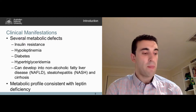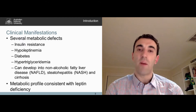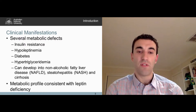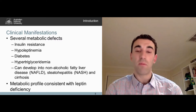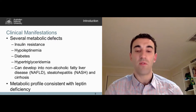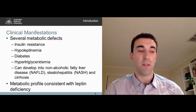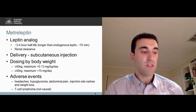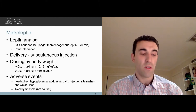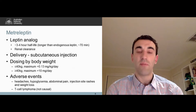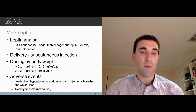The metabolic phenotype of these patients is consistent with a genetic leptin deficiency, and leptin replacement therapy in these patients largely reverses these abnormalities. Metreleptin is a synthetic leptin hormone analogue used in leptin replacement therapy.